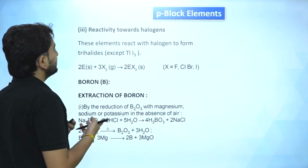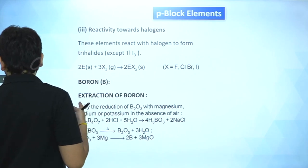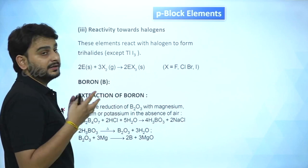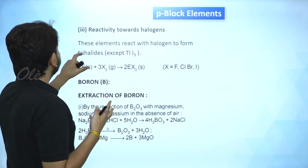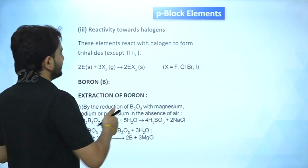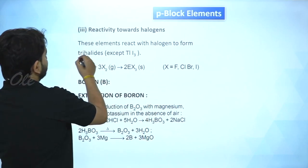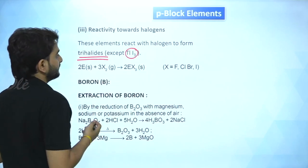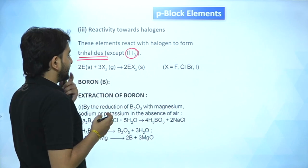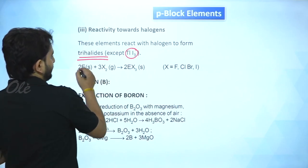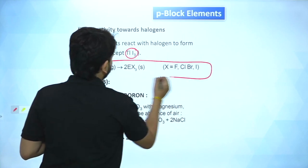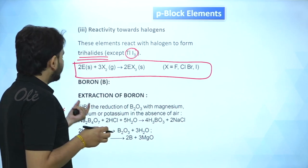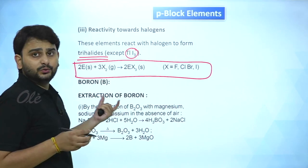Regarding reactivity towards halogens — fluorine, chlorine, bromine, iodine, astatine — group 13 elements form trihalides. However, thallium triiodide (TlI₃) is not formed. All other trihalides are formed.